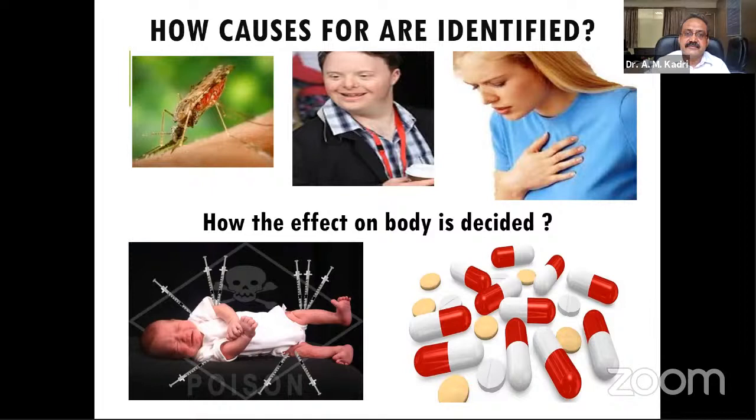Nowadays there is debate about COVID vaccines — Covishield or Covaxin, which one is better, and whether the vaccine is effective at all. How do we decide? Through clinical trials — and vaccine trials are part of epidemiological studies. Whether a vaccine is effective or not, and which is more effective, cannot be claimed just through a manufacturer's brochure. It has to be backed by data from methodological studies.